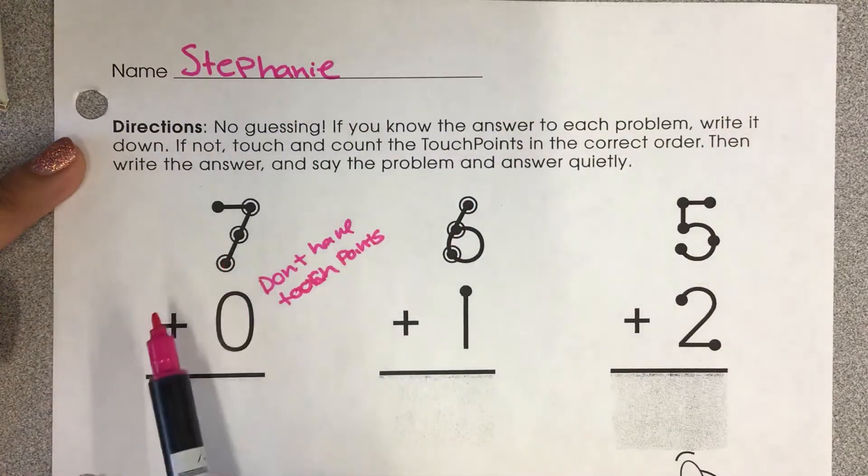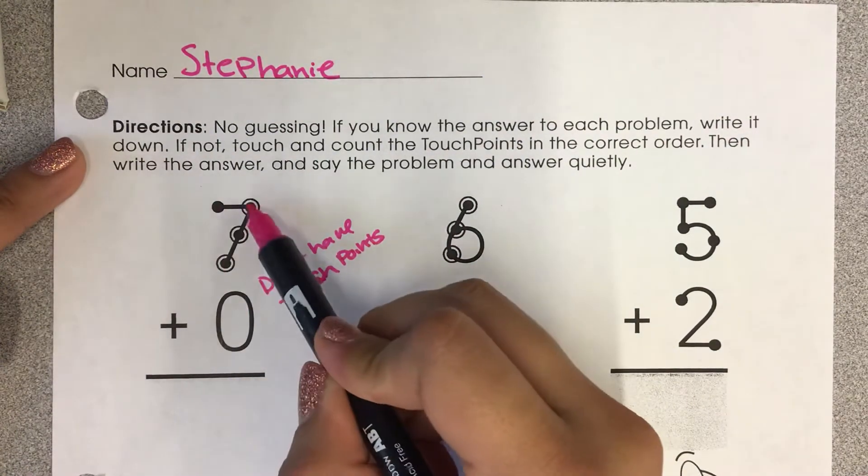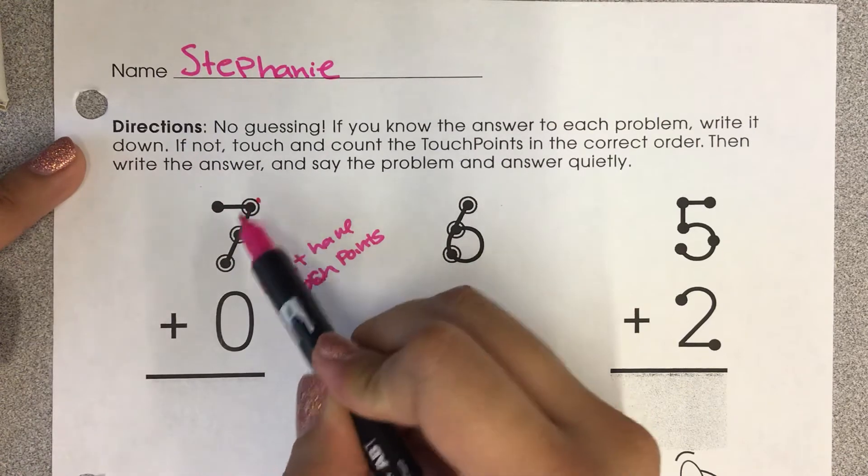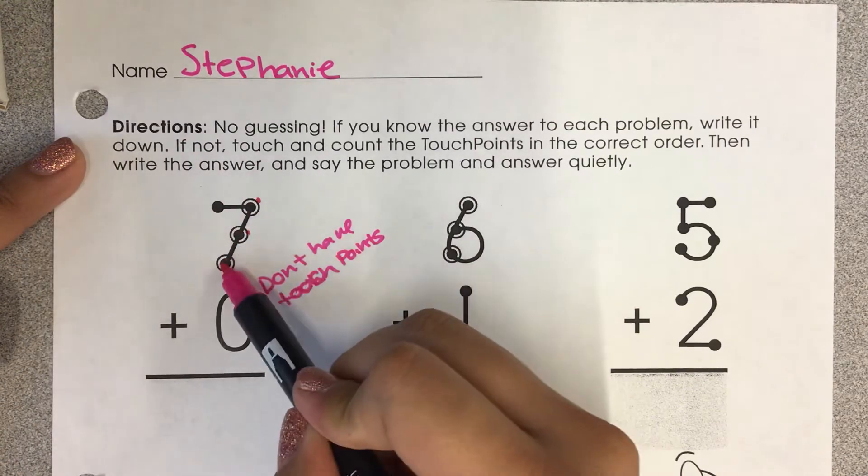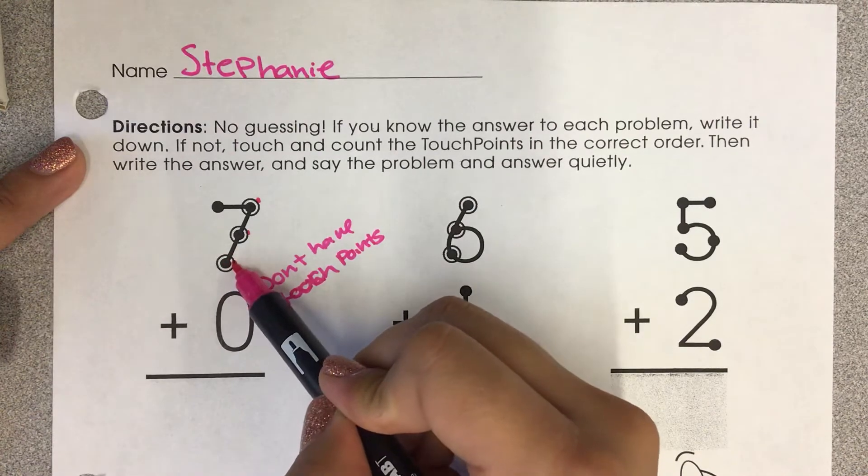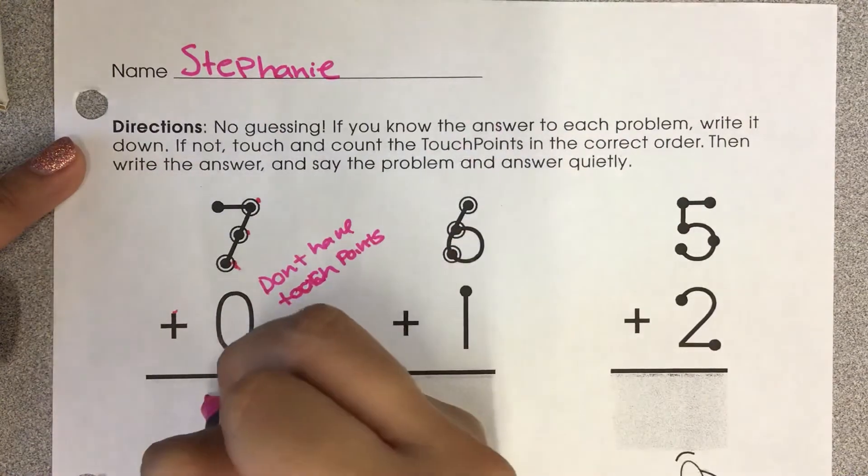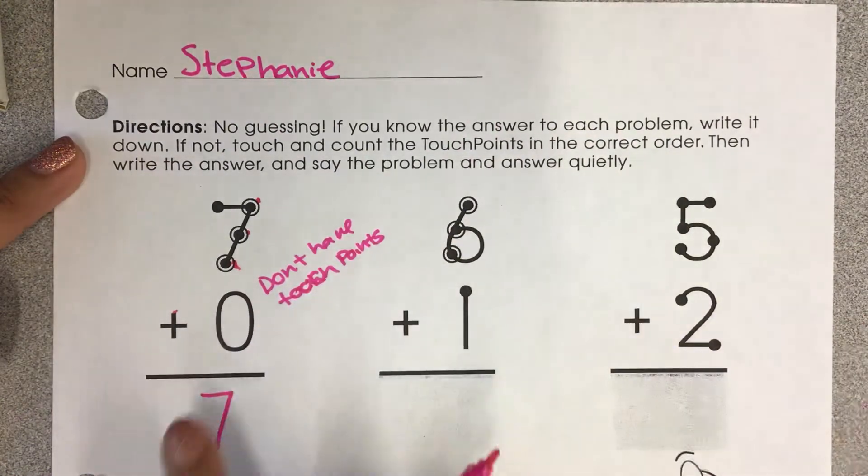So it's just going to be 7 plus 0. So we're going to go ahead and count out the touch points. 1, 2, 3, 4, 5, 6, 7. Make sure to count the dot and the ring around it. So there's 7 touch points plus no touch points. So the answer is 7.